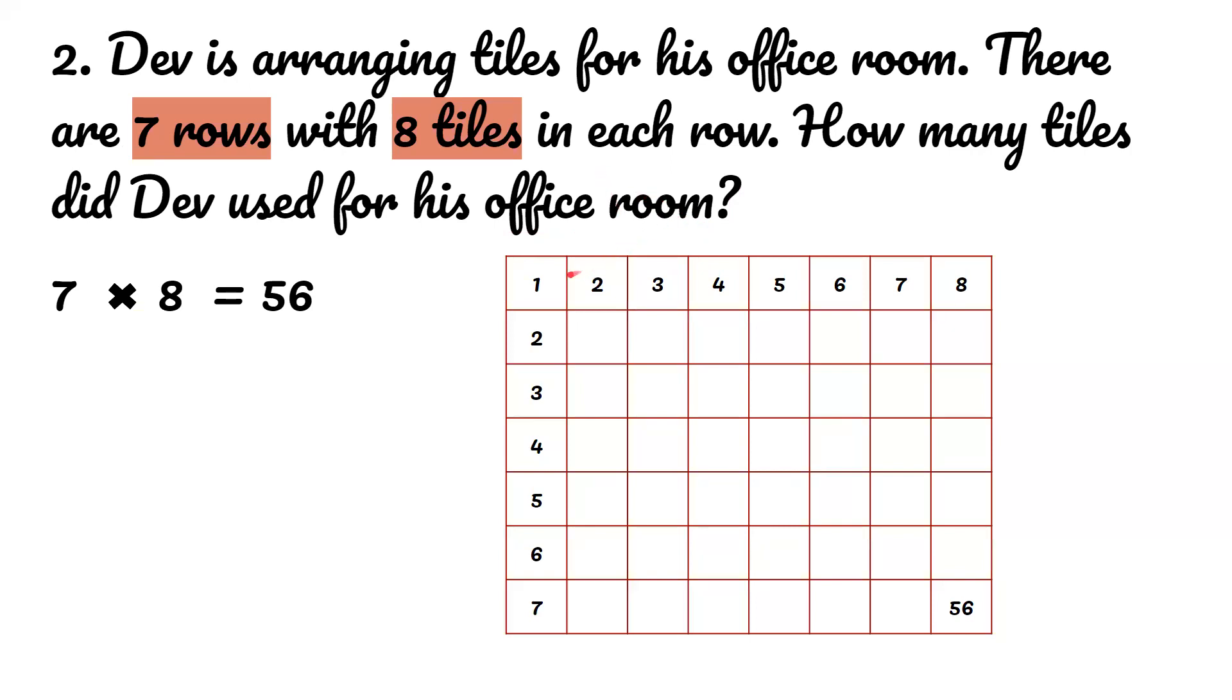Since we know there are seven rows with eight tiles in each row, we're going to need to do seven times eight which is 56. So Dave used 56 tiles for his office room.